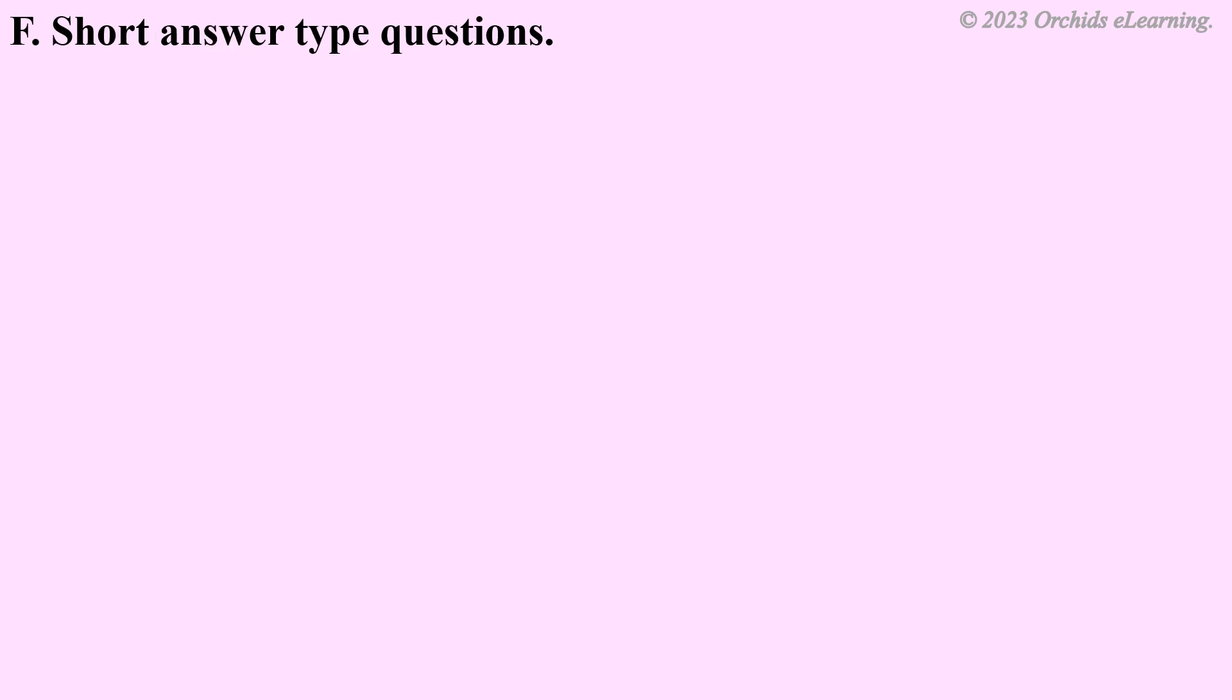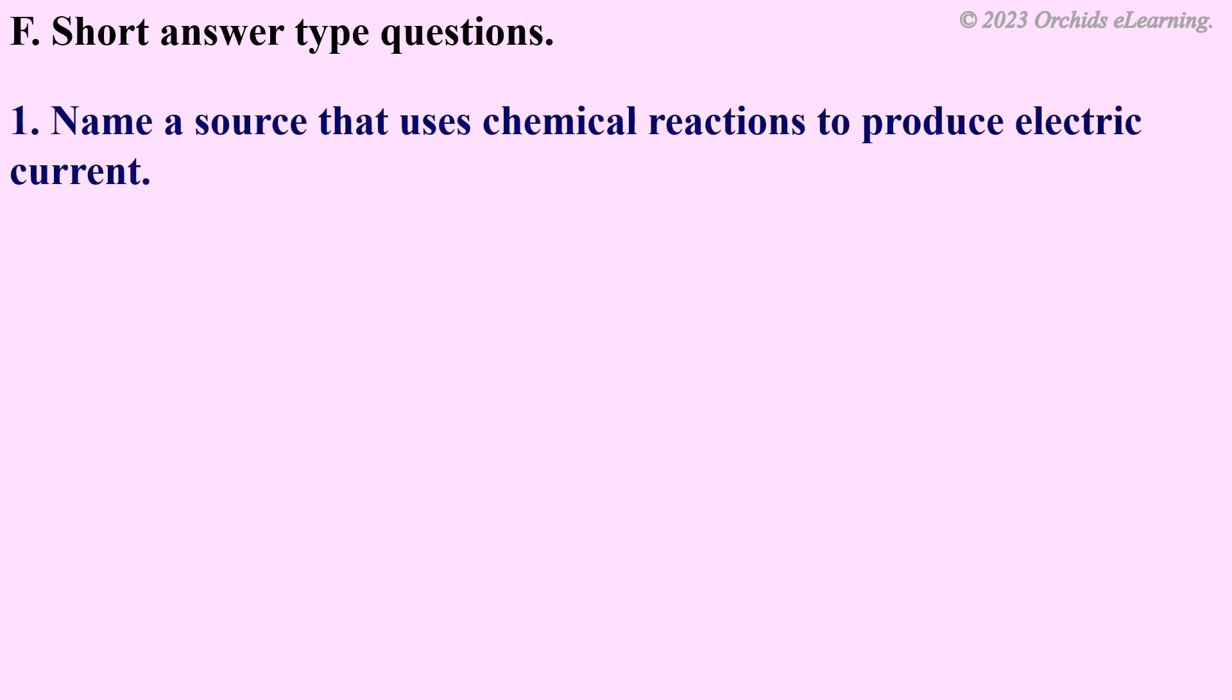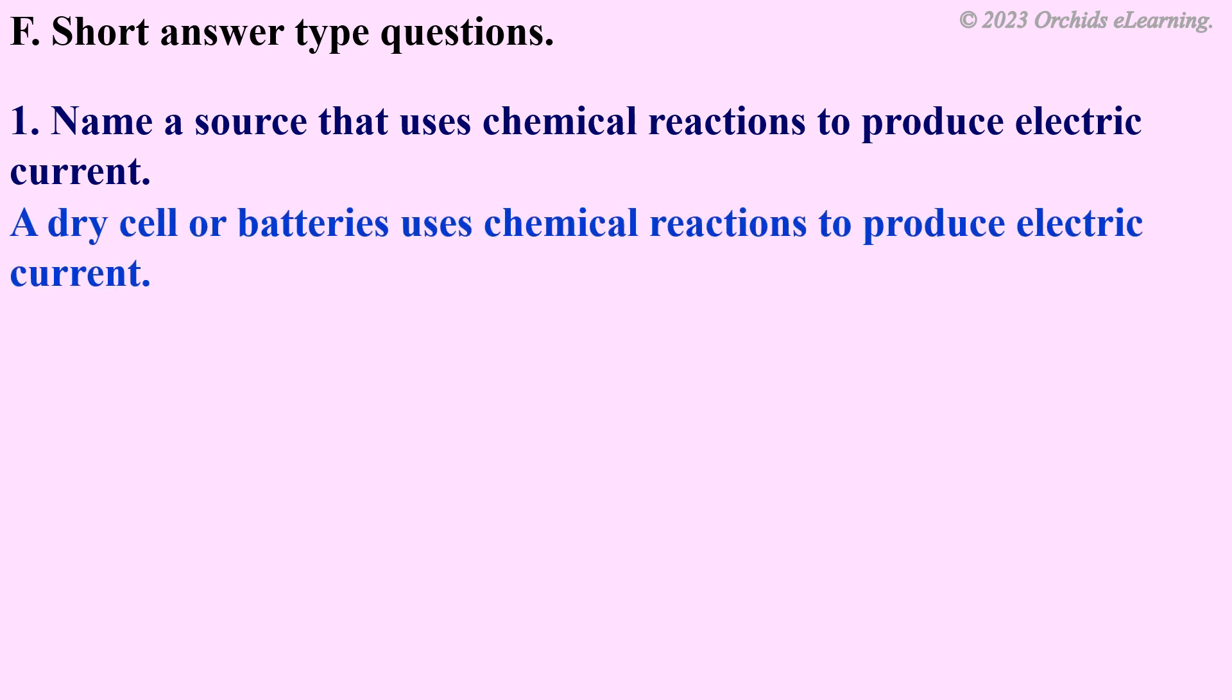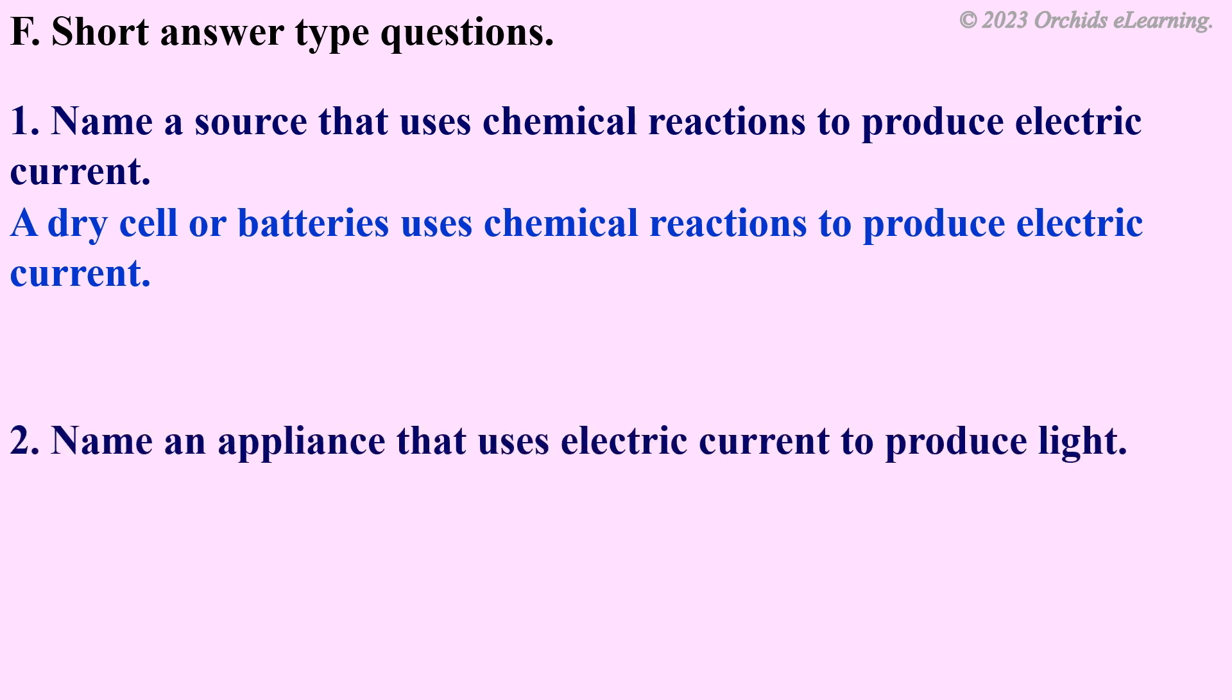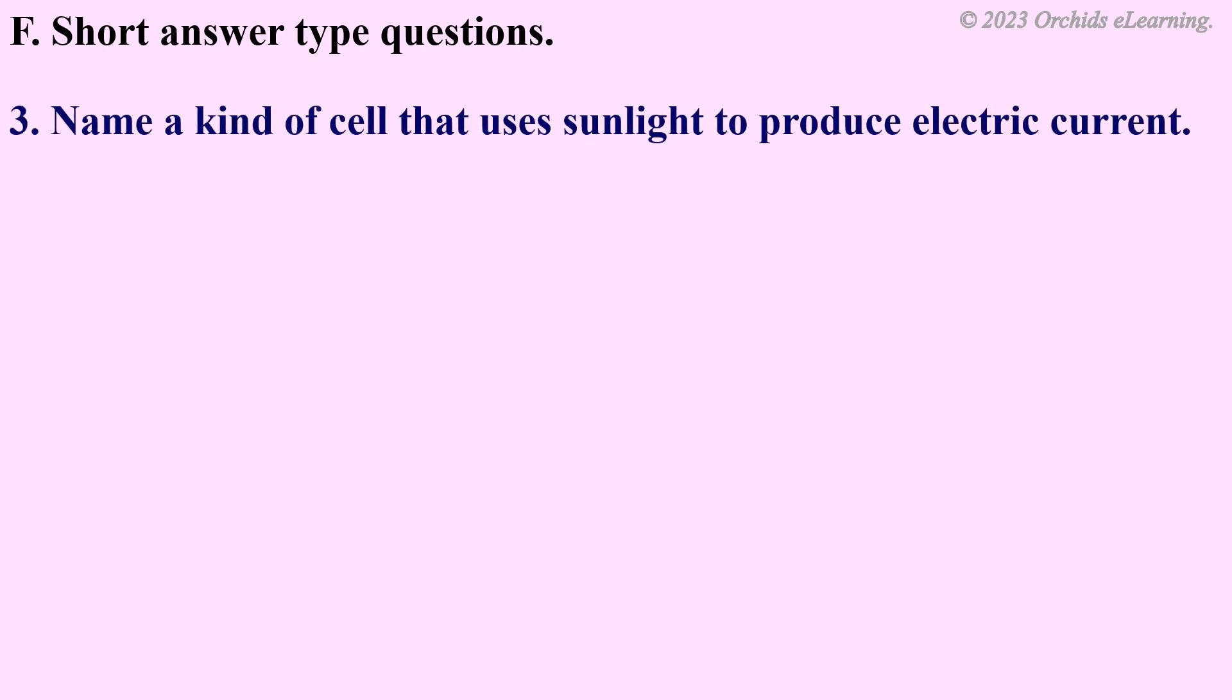Short answer type questions. Name a source that uses chemical reactions to produce electric current. A dry cell or batteries uses chemical reactions to produce electric current. Name an appliance that uses electric current to produce light. An electric bulb uses electric current to produce light. Name a kind of cell that uses sunlight to produce electric current. Solar cells use sunlight to produce electric current.